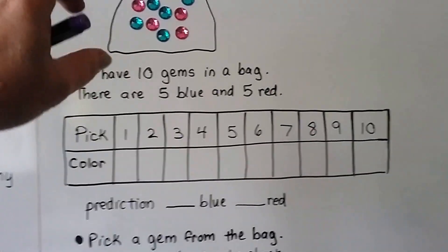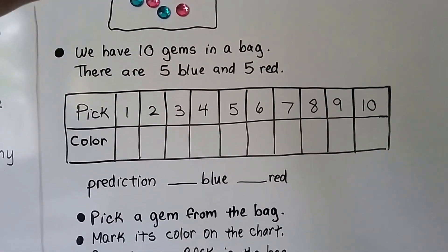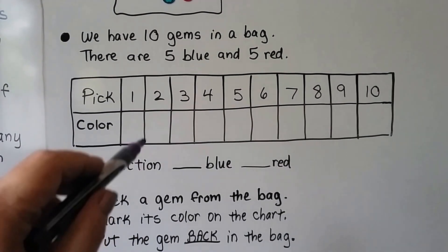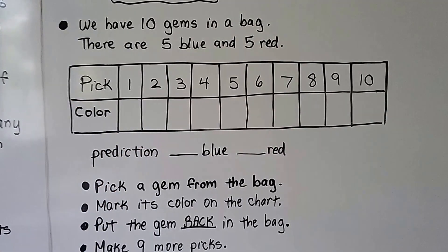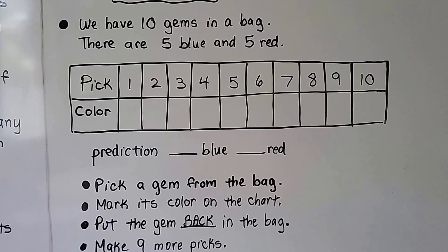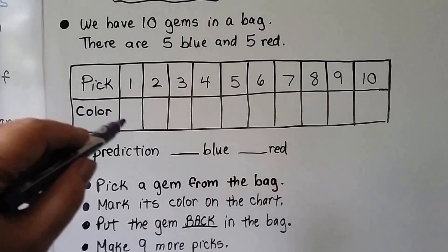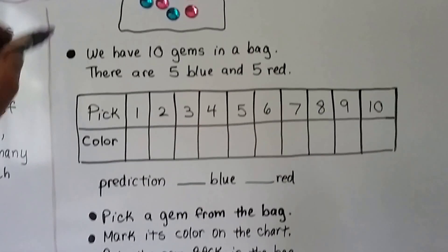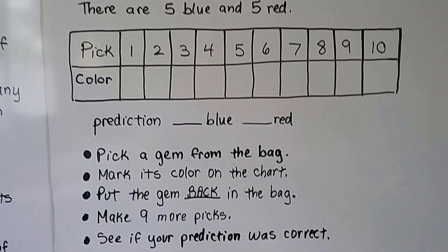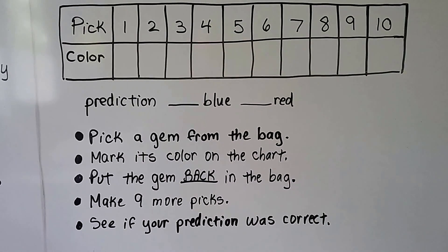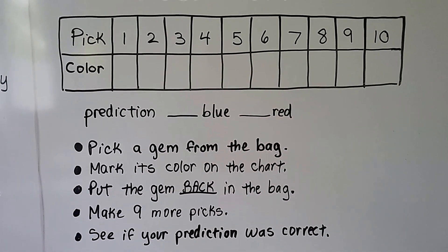We pick a gem from the bag. We don't look and we pick a gem from the bag. And then we mark its color on the chart, blue or red. When we pick one gem from the bag and we mark down what color it is for that pick, we put the gem back into the bag so there's ten in the bag again. Then we make nine more picks like that and we see if our prediction was correct.